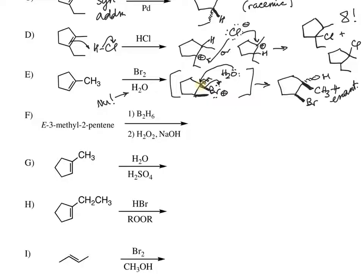Ultimately we want to make sure that we get these two groups anti to each other because of that backside attack mechanism. Our next example is a hydroboration-oxidation — two steps. This is going to give syn addition. The groups added are the components of water: we're going to add an H and an OH — a hydrogen and a hydroxyl group. We have E-3-methyl-2-pentene, so let's draw 2-pentene and add the double bond.